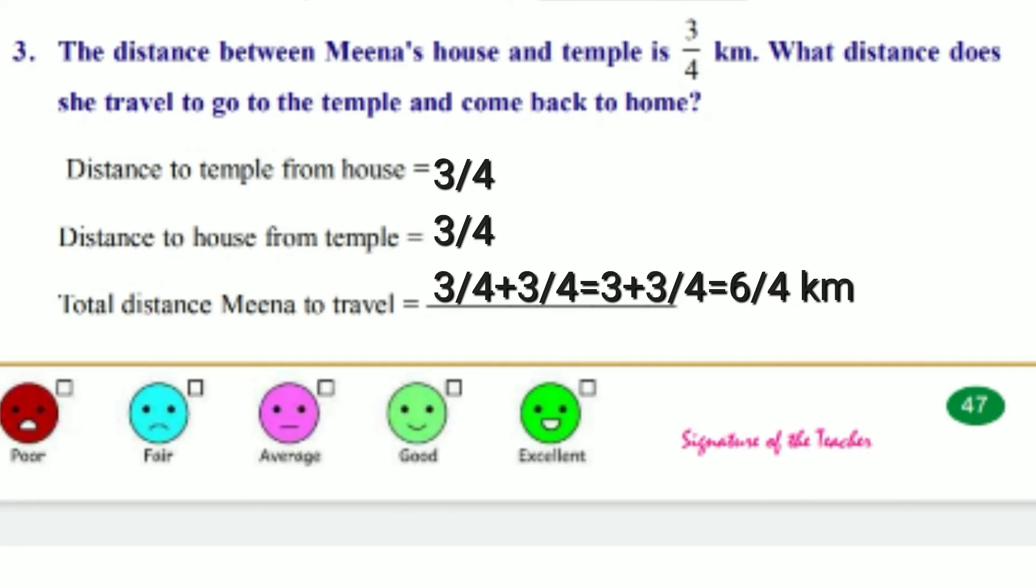3/4. Total distance Meena to travel is equals to 3/4 plus 3/4 is equals to 3 plus 3 by 4 is equals to 6/4 km.